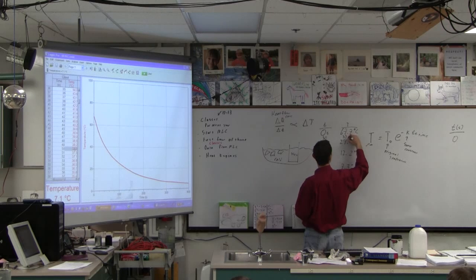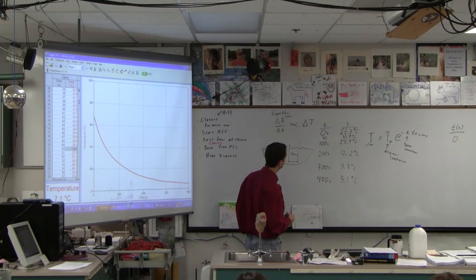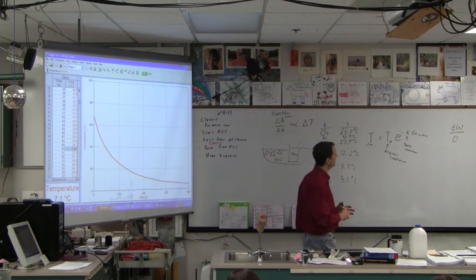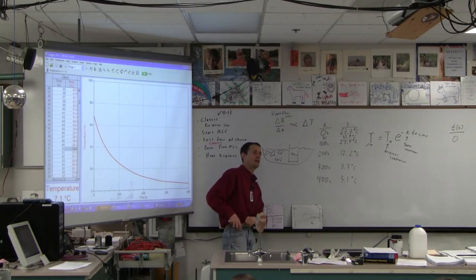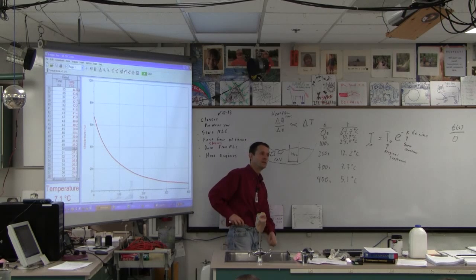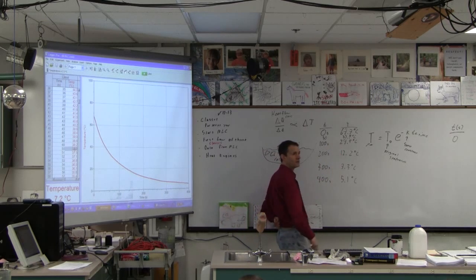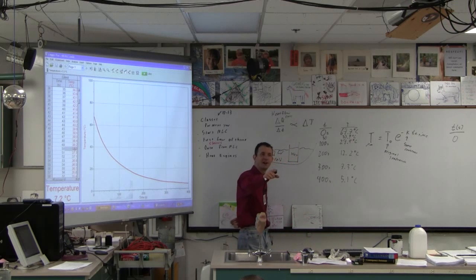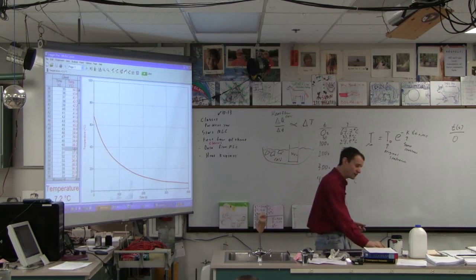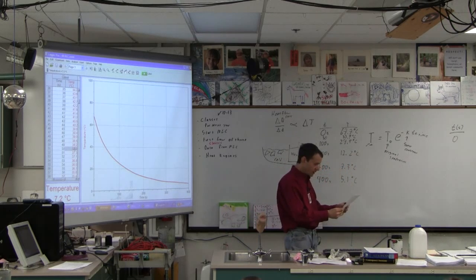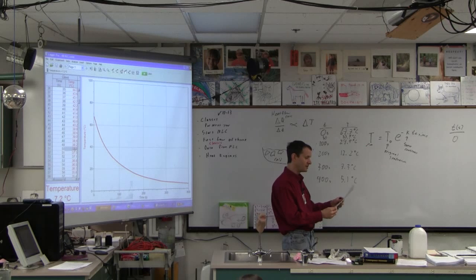Now what should be true about our constant? What makes it a good constant? If this model works, what should be true about K if I calculate it here, here, here, and here, and here? It should be the same, because that's why it's called a constant. Yeah, there you go. Okay, so how do you, what if you look at the thing there?